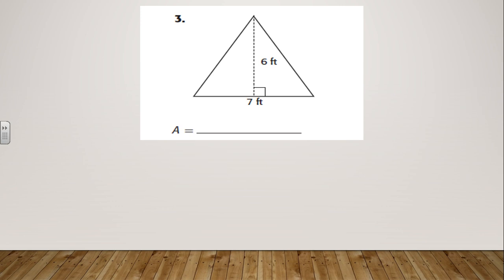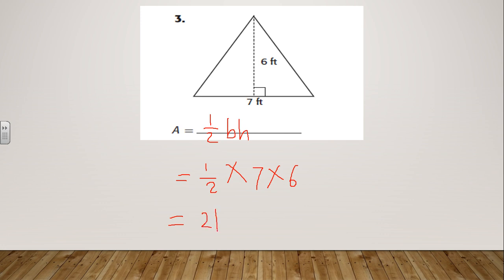Welcome back! Let's solve it together. Tell me the rule — area of triangle equals half times base times height. That equals half times seven times six. We can do half times six first: half of six is three, and three times seven equals 21.